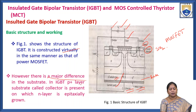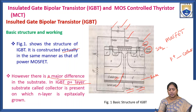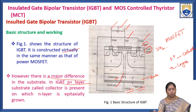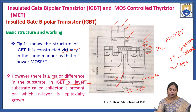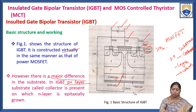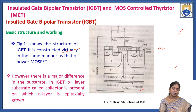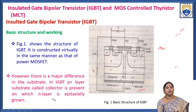However, there is a major difference in the substrate. In the IGBT, the P+ layer substrate is called the collector, present on the N layer. The N layer is epitaxially grown, and the P+ layer acts as the substrate while the collector is on the N layer.